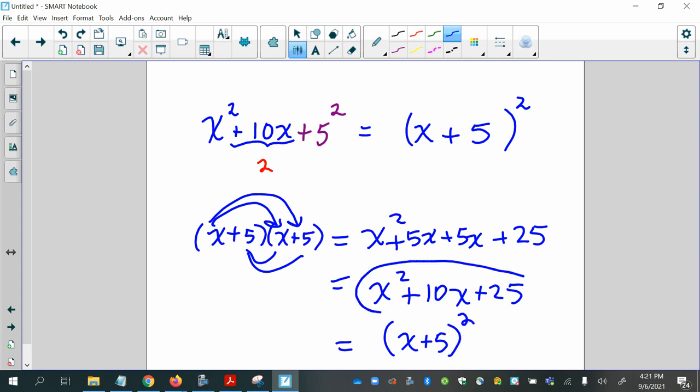So x squared plus 10x plus 25 in factored form is x plus 5 quantity squared. It's a perfect square. This is a perfect square trinomial. And this is it in factored form or what we call a binomial squared.